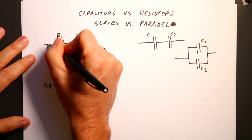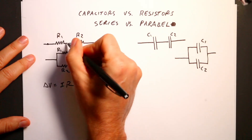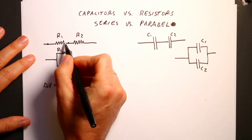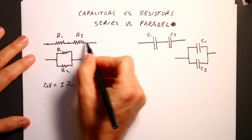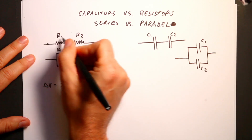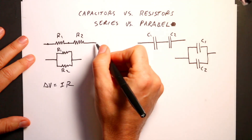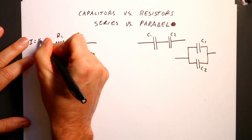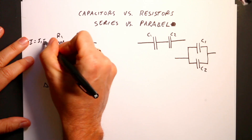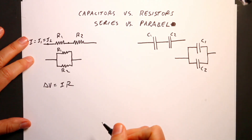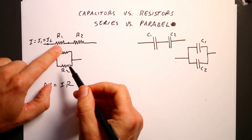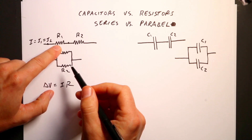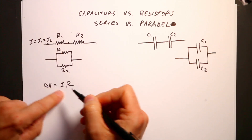An object is in series if you take one end and another end and connect it to another one. A really important thing that happens here is that the current is the same through these two resistors. So I equals I1 equals I2 — they all have the same current. Now let's find the voltage drop across R1.